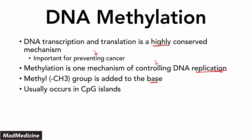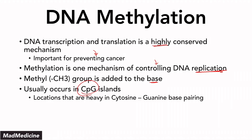Usually, this is going to happen in the CpG islands. CpG islands are locations where you have a high amount of cytosine and guanine base pairing occurring. This happens in a CpG island, which involves very strong bonds — three bonds in these islands. On top of that, this is going to happen on both strands. The 5' to 3' and the 3' to 5' strands both get methylated at the cytosine and guanine base pair, methylated on each side.